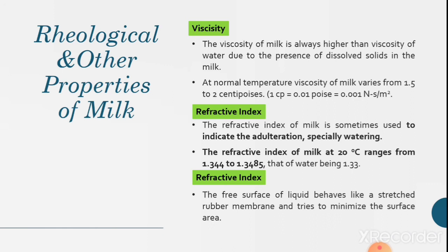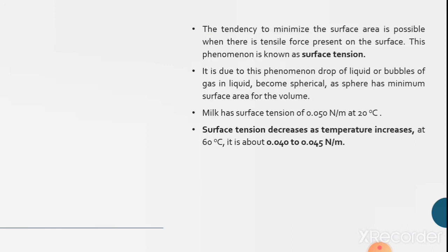Surface tension. The free surface of liquid behaves like stressed rubber membrane and tries to minimize the surface area. The tendency to minimize the surface area is possible when there is a tensile force present on the surface. This phenomenon is known as surface tension. It is due to this phenomenon drop of liquid or bubbles of gas in liquid becomes spherical as sphere has minimum surface area for the volume. Milk has surface tension of 0.050 N per meter at 20 degrees Celsius. Surface tension decreases as the temperature increases. At 60 degrees Celsius it is about 0.040 to 0.045 N per meter.